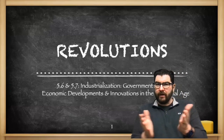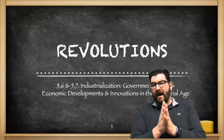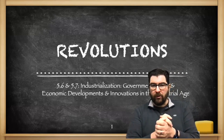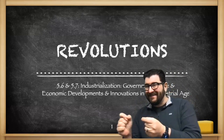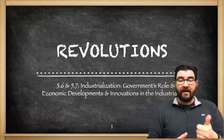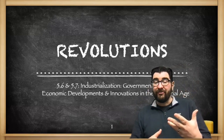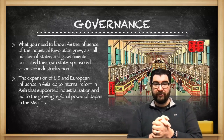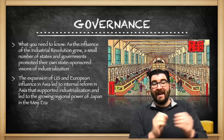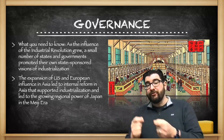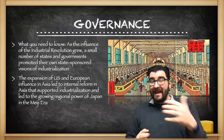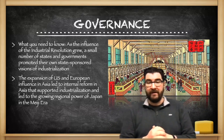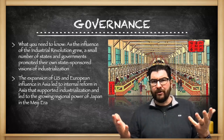Welcome back. Today we're going to continue our walk through Unit 5 of the Revolutions Unit of AP World Modern with a discussion of 5.6 and 7 — governments' role in industrialization and the economic developments that continue to spur this industrial revolution. As the influence of the Industrial Revolution grows, a number of states and governments around the world are going to promote their own state-sponsored visions of industrialization to varying degrees of success.